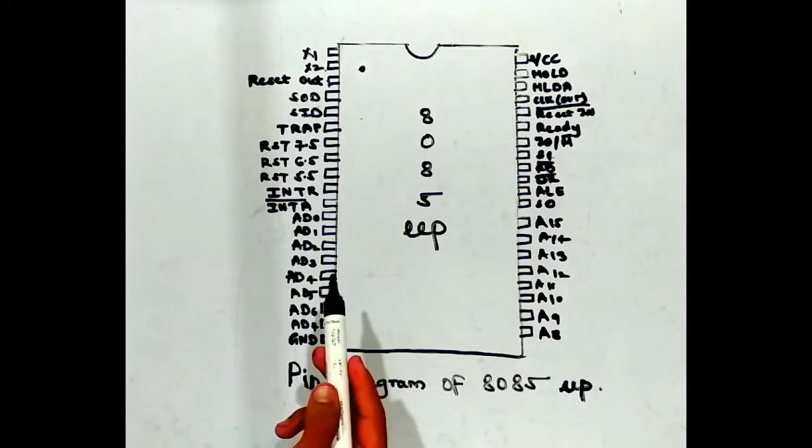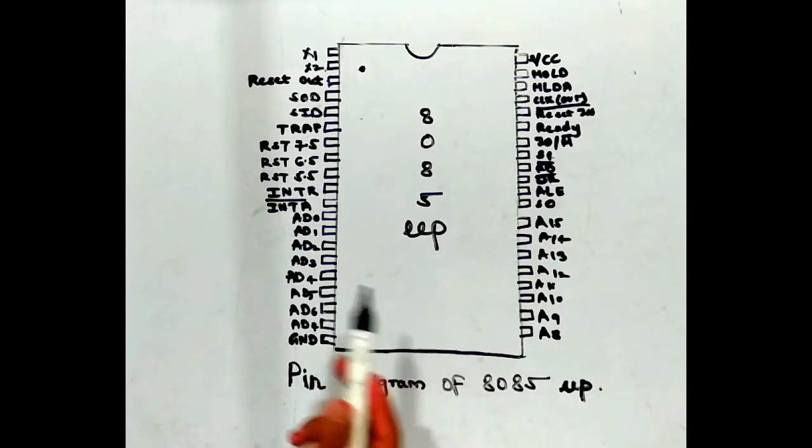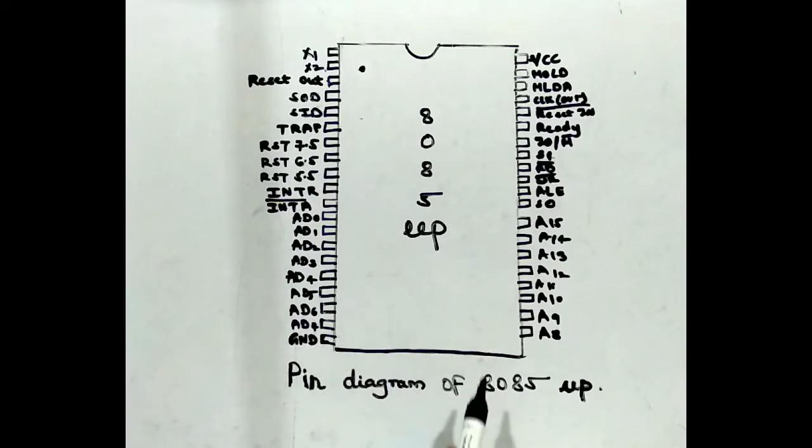The 8085 microprocessor has a 16-bit address bus and 8-bit data bus, which are AD0 to AD7 and AD8 to AD15.